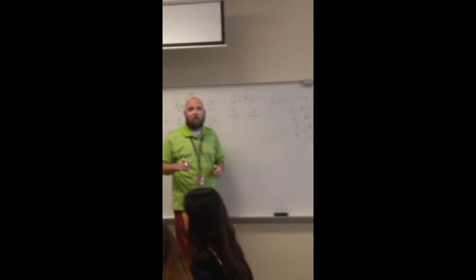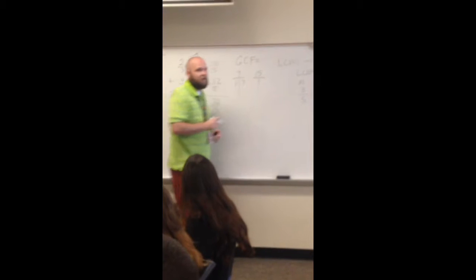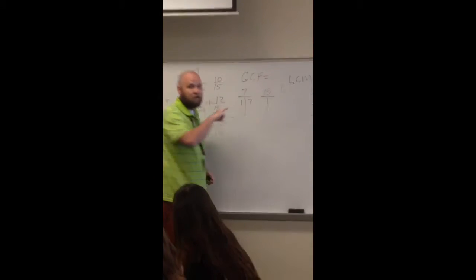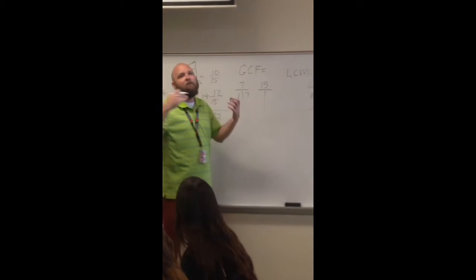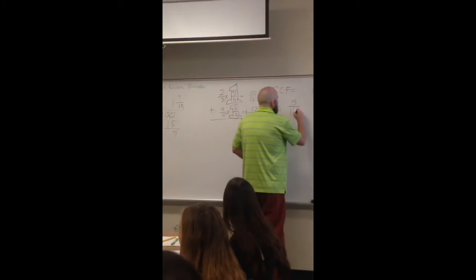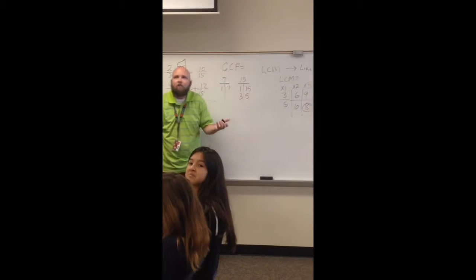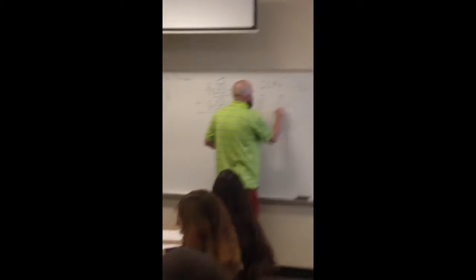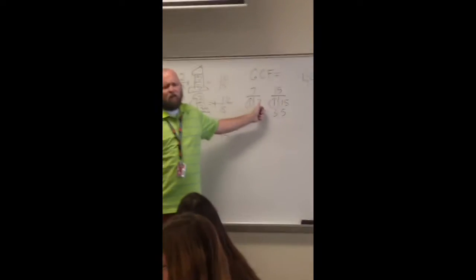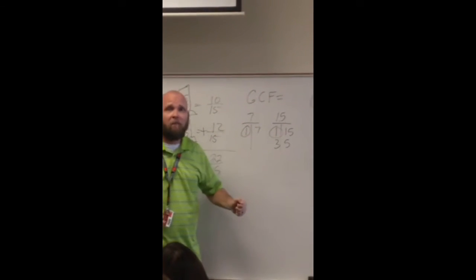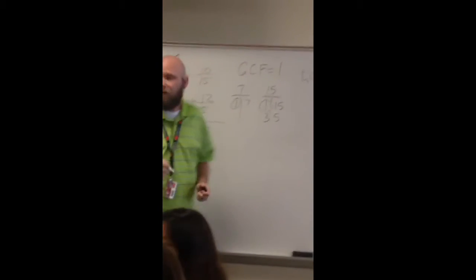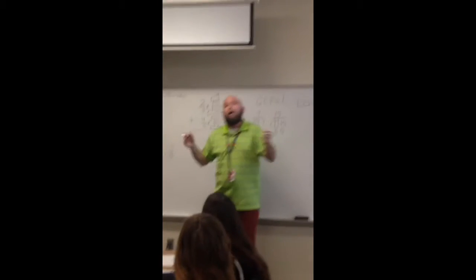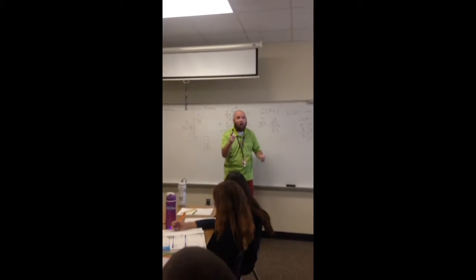I find what multiplies together to equal 7 — those are called factors. So I have 1 and 7. I don't have anything else that multiplies together to equal 7, which means my only factors of 7 are 1 and 7. Now I have to find all the factors of 15: 1 and 15, and 3 and 5. Now I find everything they have in common — they have a 1 in common. They don't have a 7 in common, which means the greatest common factor is 1. If my greatest common factor is 1, that means I don't have to simplify, making my answer 1 and 7 fifteenths. I certainly hope you found this helpful.